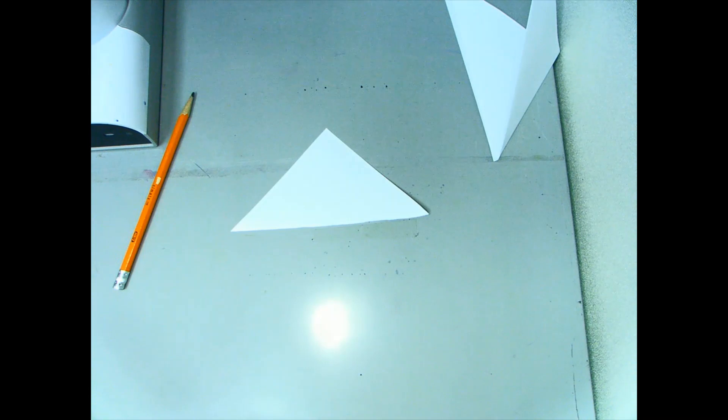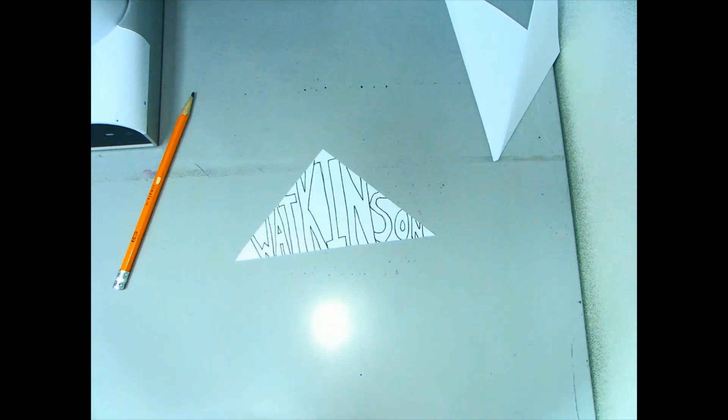With your pencil, write your name or a word on the triangle. I like to use bubble letters or block letters. Make sure the lines go off the top and bottom of your triangle.